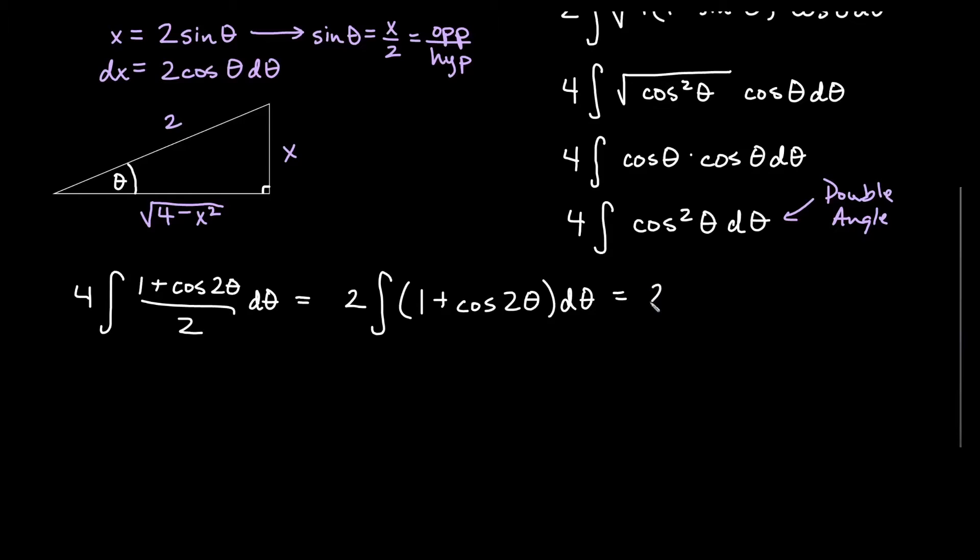I'll remember that I have a 2 out here. The antiderivative of 1 d theta is just theta. And then the antiderivative of cosine 2 theta would be sine 2 theta, but the reciprocal of 2 will come out because we're doing the antiderivative. So we'll get 1 half sine 2 theta plus c.